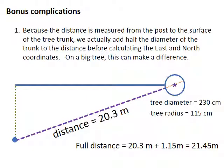There are a couple of additional details that are good to know. First, we measure the distance from the corner post to the surface of the tree, to the bark of the tree. But for a big redwood, for instance, the surface of the tree might be as much as a meter from the center of the tree. So we actually add in half the diameter of the trunk to the distance before we calculate the east and north coordinates. For small trees, this doesn't make much difference, but for big trees, it does.